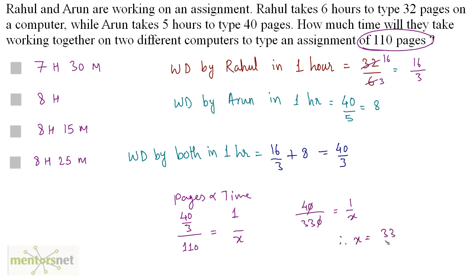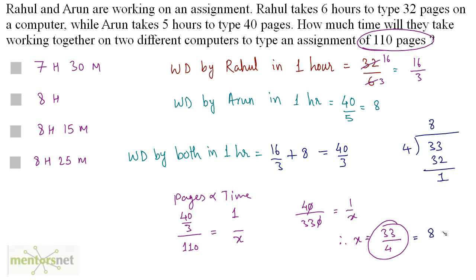These cancel out, therefore x equals 33 by 4. Dividing 33 by 4: 4 eights are 32, so this is 8 and 1 by 4. That is 8 hours and 1 by 4 hours, and 1 by 4 hours is 15 minutes. So 8 hours 15 minutes is the correct answer.